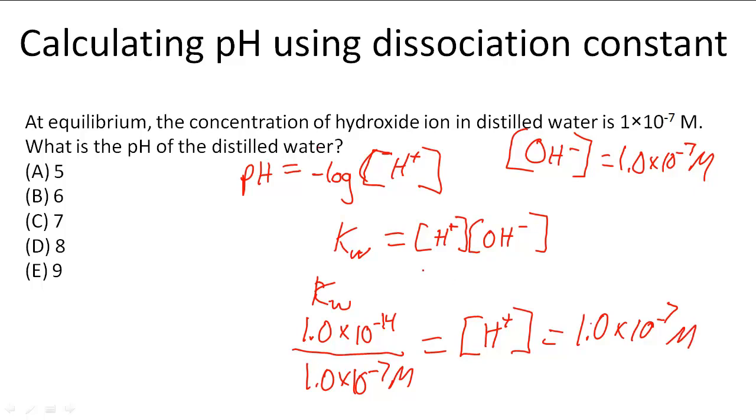Now using that, we can do negative log of 1.0 times 10 to the negative 7, and we get that the pH is 7. So C must be the answer to our problem.